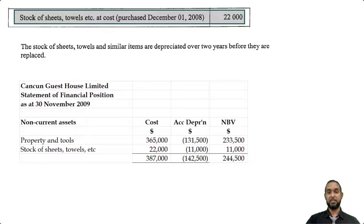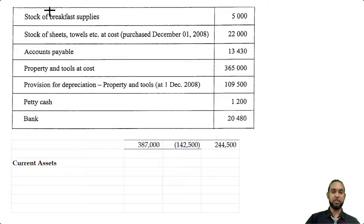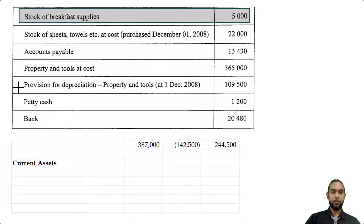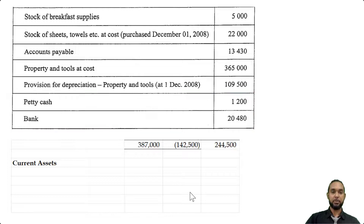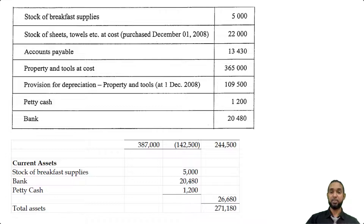Moving to current assets: we have stock of breakfast supplies of $5,000, bank of $20,480, and petty cash of $1,200, giving total current assets of $26,680. Adding this to the net book value of non-current assets gives us total assets.